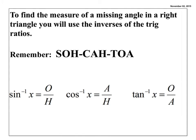Instead of solving for a missing side measure, today we are solving for a missing angle measure. When dealing with a missing angle measure, you create a variable on the left-hand side of your equation with the sine, cosine, or tangent. We have to talk about how to get rid of that. Remember that we are still using SOHCAHTOA — you need to have that memorized by now, as it gives us our relationships for sine, cosine, and tangent.